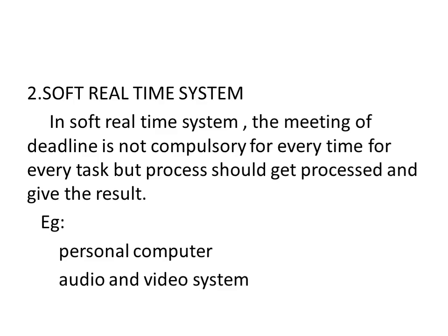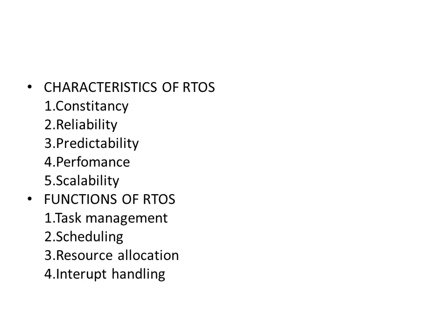An example of a soft real-time system is a personal computer. Some characteristics of a real-time operating system are consistency, reliability, predictability, performance, and scalability. Key functions of real-time operating systems include task management, scheduling, resource allocation, and interrupt handling.